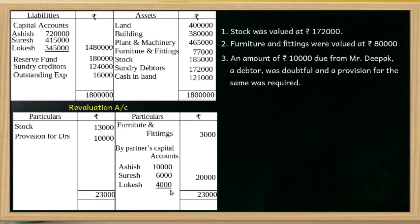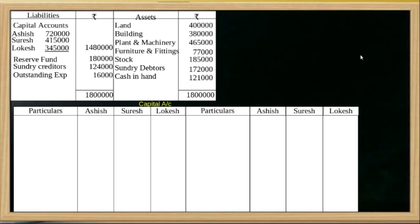The revaluation account is now complete. Revaluation profit or loss is shared by all partners, including the retiring partner. In admission, only old partners share it. But in retirement, the retiring partner is included because the revaluation is as of the date of retirement. The capital accounts — Ashish, Suresh, and Logesh — are prepared showing the opening balance of capital.